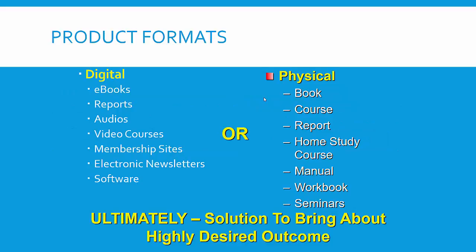Let's talk about product formats. Digital products can be ebooks, reports, audios, video courses, membership sites, electronic newsletters, software. Videos can be uploaded to Teachable, Udemy, or your own site. Then you've got physical products: books, courses, reports, home study programs, manuals, workbooks, seminars. Ultimately all of these achieve the same thing — you're defining a solution to bring about a highly desired outcome. No different.